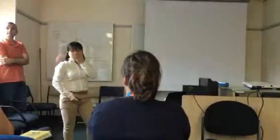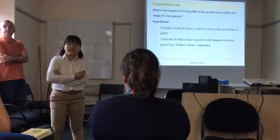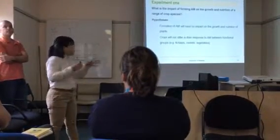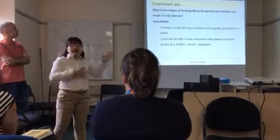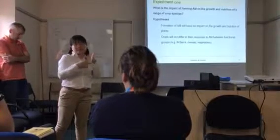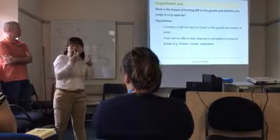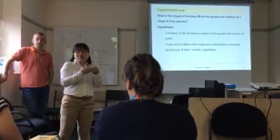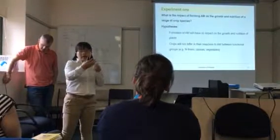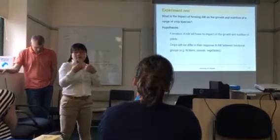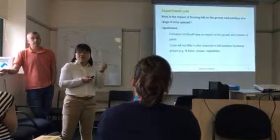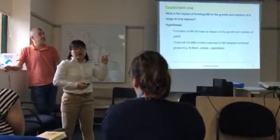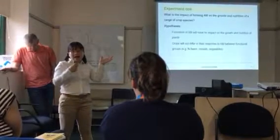A question was raised about what 'forming AM' means and why the hypothesis states AM will have no impact on growth and nutrition. Forming AM is the mutualistic association between plants and fungi — when you inoculate the fungus with the plant, the two form AM, whereby the plant receives mineral nutrition from the fungus and the fungus receives a carbon supply from the plant. In this hypothesis, I use a null hypothesis showing no effect, but I actually hope they do have an effect.